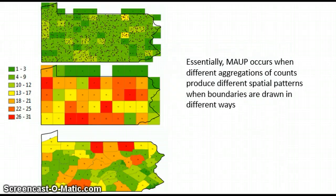As you can see, the spatial patterns change between each of these maps. So essentially, the modifiable area unit problem occurs when different aggregations of counts produce different spatial patterns when boundaries are drawn in different ways.